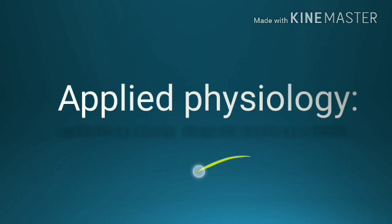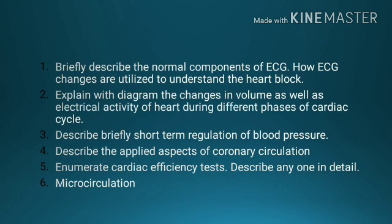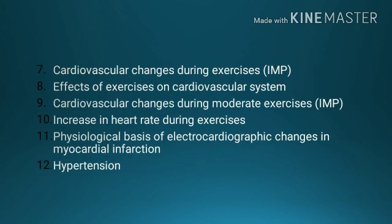Applied physiology questions: Number 1, briefly describe the normal components of ECG; how are ECG changes utilized to understand heart block? Number 2, explain with diagram the changes in volume as well as electrical activity of heart during different phases of cardiac cycle. Number 3, describe briefly short-term regulation of blood pressure. Number 4, describe the applied aspect of coronary circulation. Number 5, enumerate cardiac efficiency tests; describe any one in detail.